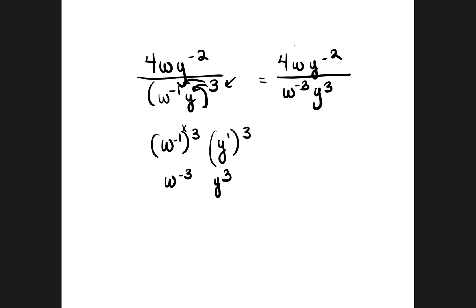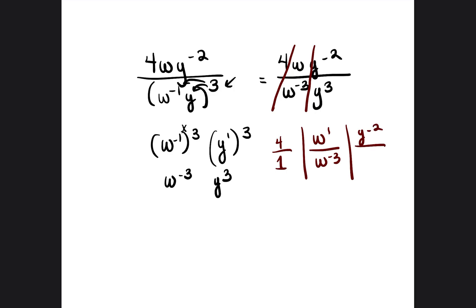Now we're going to take it piece by piece and divide. It'll be 4 divided by that invisible 1, then w to the 1 power divided by w to the negative 3. 4 divided by 1 is just 4. When dividing exponents, we subtract them, so it'll be 1 minus negative 3, which is 1 plus 3, which equals 4. So it'll be w to the fourth power.